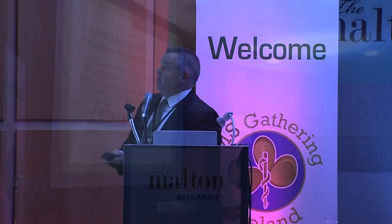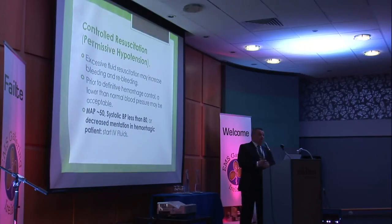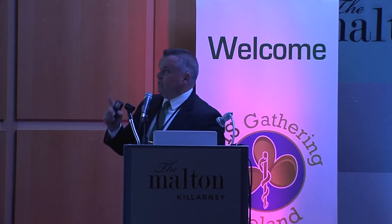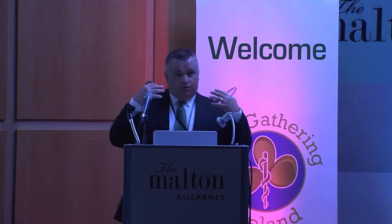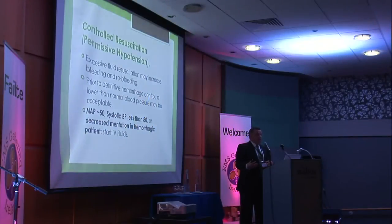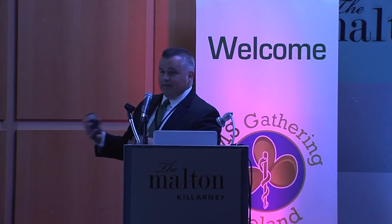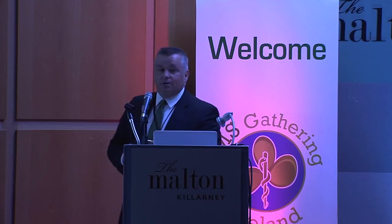Controlled resuscitation — permissive hypotension — was considered sacrilegious back in the 90s. The key insight is that excessive fluid resuscitation can increase bleeding or re-bleeding; you can pop the clot. If the patient is maintaining central pressures after significant blood loss, there's no reason to jump onto fluids, especially crystalloid. Prior to definitive hemorrhage control, a lower-than-normal blood pressure may be acceptable — approximately a MAP of 50, or a systolic blood pressure less than 80, or a decreased radial pulse. At that threshold you can give a small amount of fluid.